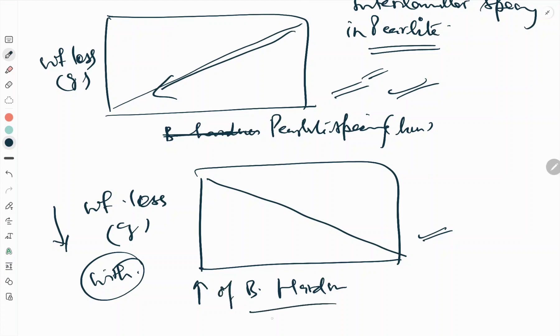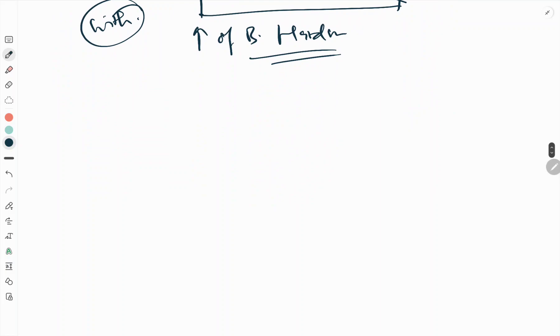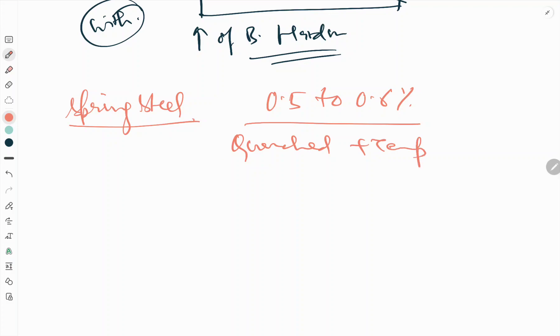Now we see the spring steel. Spring steels have carbon content in the range of 0.5 to 0.6 percent. Also, they are quenched and tempered. Quenching is done to get a high level of yield strength.